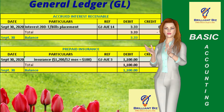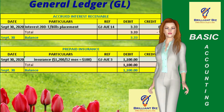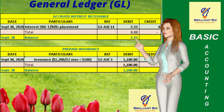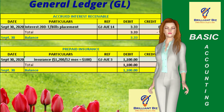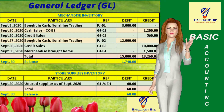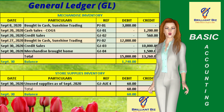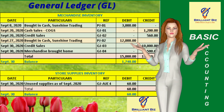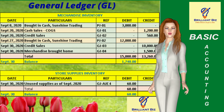Next is the general ledger of the prepaid insurance account, which represents the 11-month unexpired portion — the remaining term of the one-year insurance coverage for merchandise inventory. This is the general ledger of the merchandise inventory account, which represents the cost of goods available for sale as of September 30, 2020. Next is the general ledger of the store supplies inventory account, which represents the unused store supplies that were physically counted early morning of October 1, 2020.